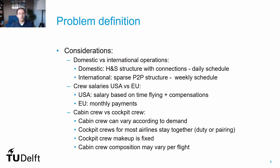There are also differences between crew scaling in Europe and in America. One of them is the way crew are paid, and therefore how we assess costs associated with duty periods. In the US, crews are paid based on the time they fly. They usually have a fixed amount paid regardless of the number of hours they fly, but the large amount of salary comes from the length of their duties, plus compensations like accommodation, meals, or additional hours.